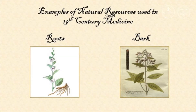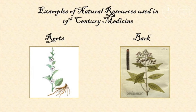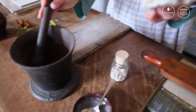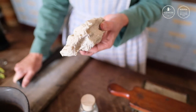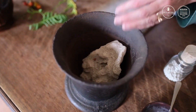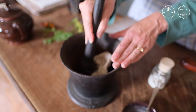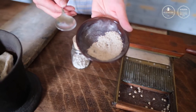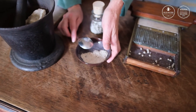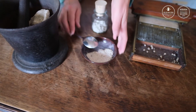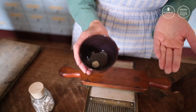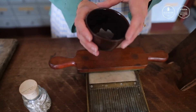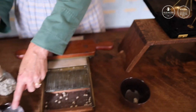He starts off by using natural resources that have medicinal properties. One common treatment for arthritis even involved coral. Once he has the natural ingredients, to make a powder he's going to use a mortar and pestle to grind them up. Here is some coral that has been ground into a powder. Now this powder is coarse and not something that would be fun to eat, so we make a pill. Dr. Vierling will make a binding agent with a simple mixture of flour and just enough water to hold the dough together.